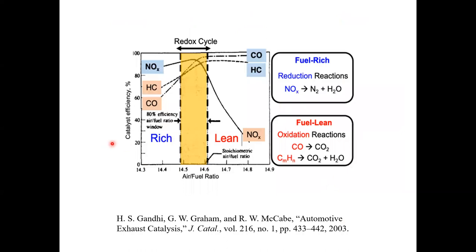This shows the catalyst efficiency in the catalytic converter: the engine operates around the stoichiometric air-to-fuel mixing ratio, and the conversion of CO, hydrocarbons, and NOx is in the range of 80% or higher, happening very efficiently around that stoichiometric point.